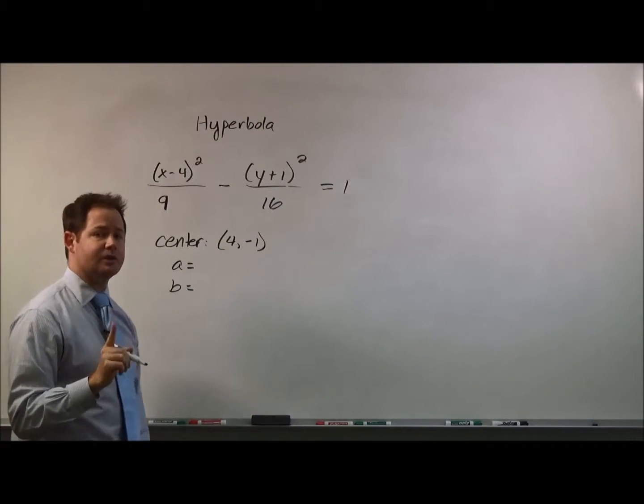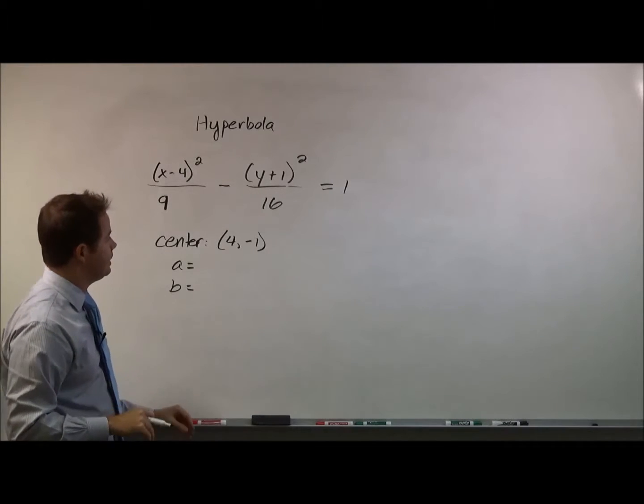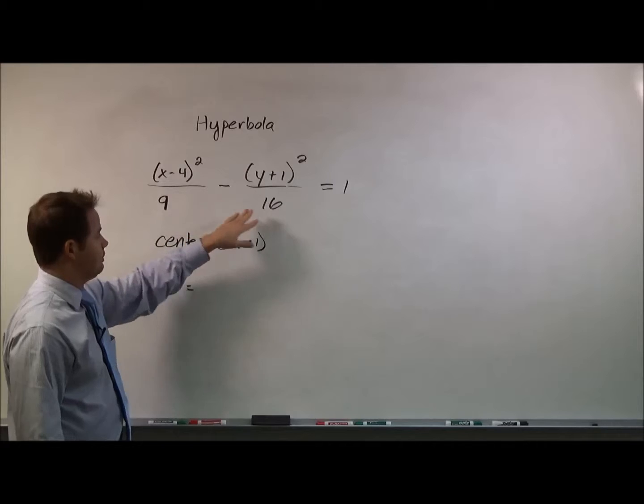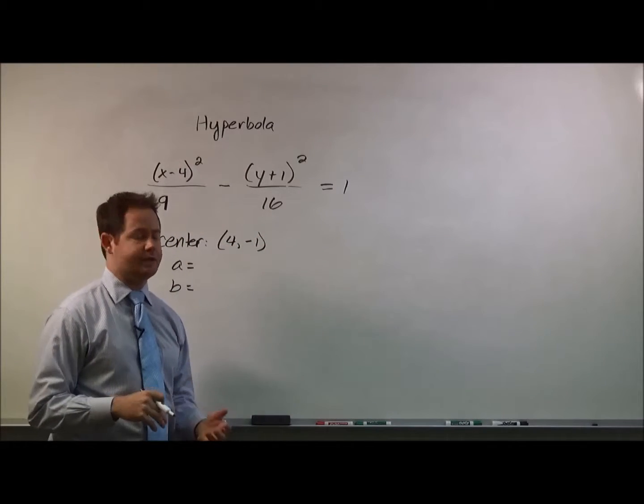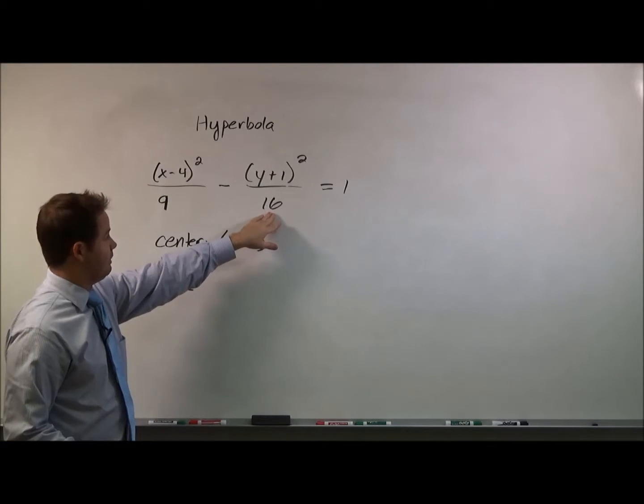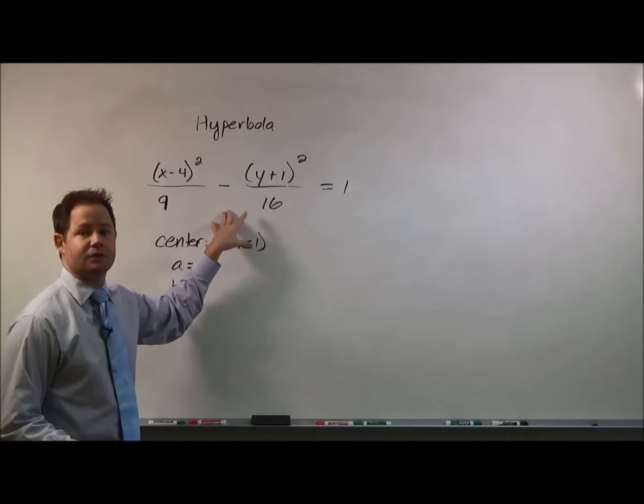And the value of a, this part's a little bit different for an ellipse. If you remember in an ellipse, that a was always the larger number. So when you had an a squared and a b squared under your x and y terms, you always picked the larger value.